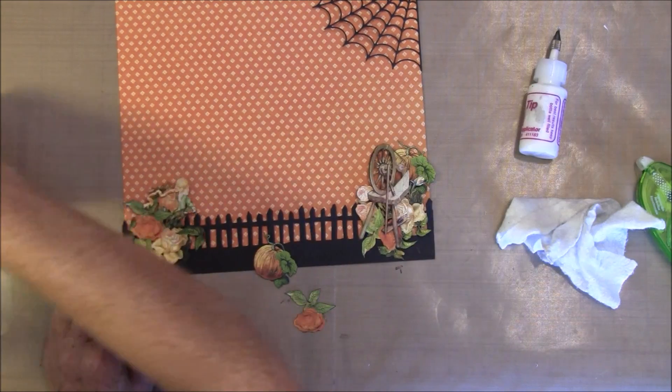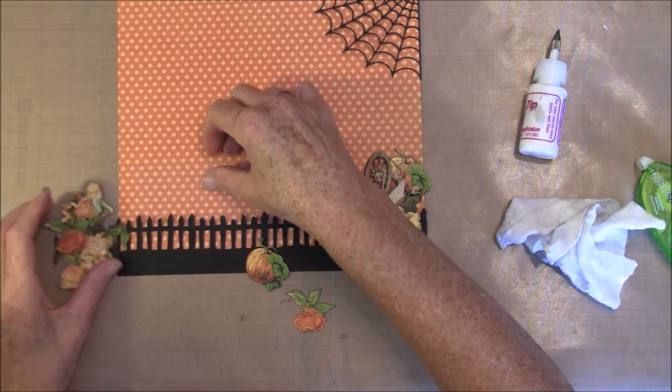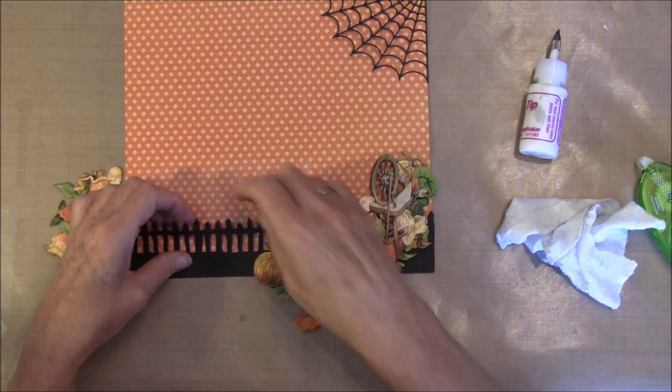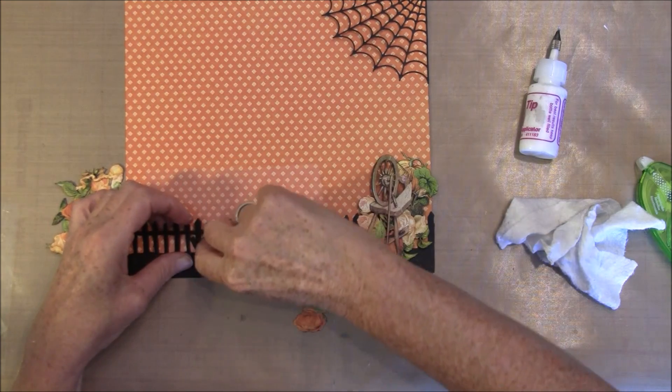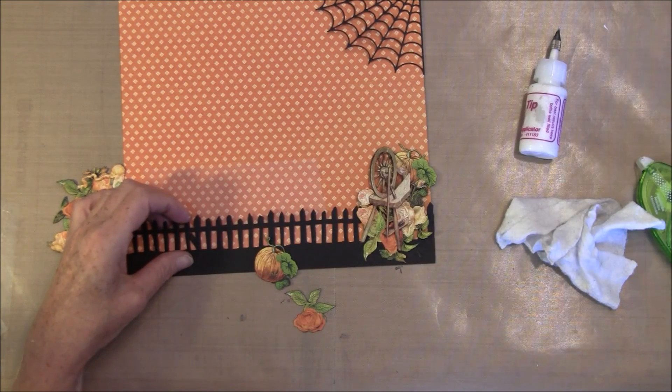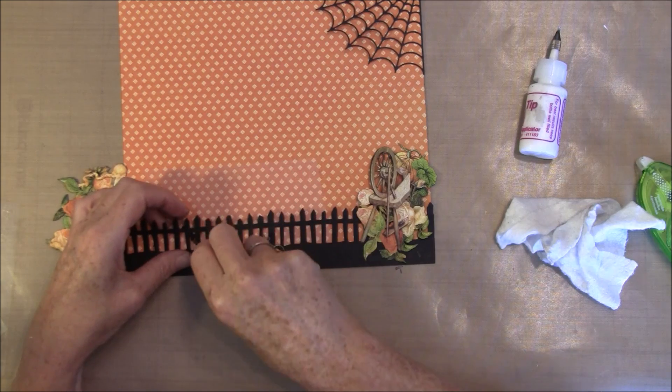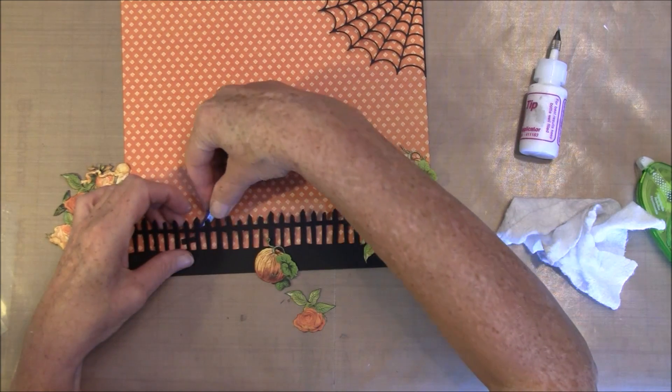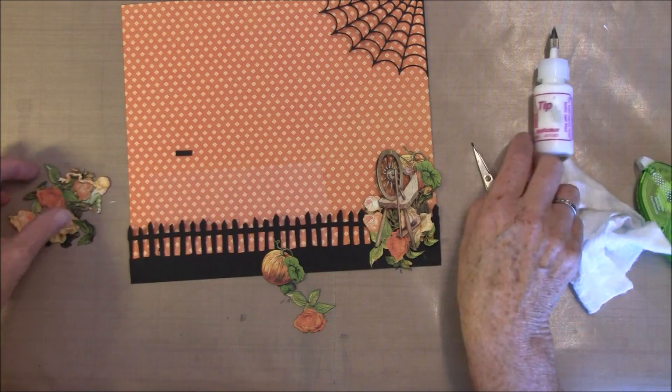I can take in some acetate here. So here I used the fence again from Tim Holtz. Here I see I have a little snip here. So I just glued two together and cut it to size and I glued it direct on the paper here.